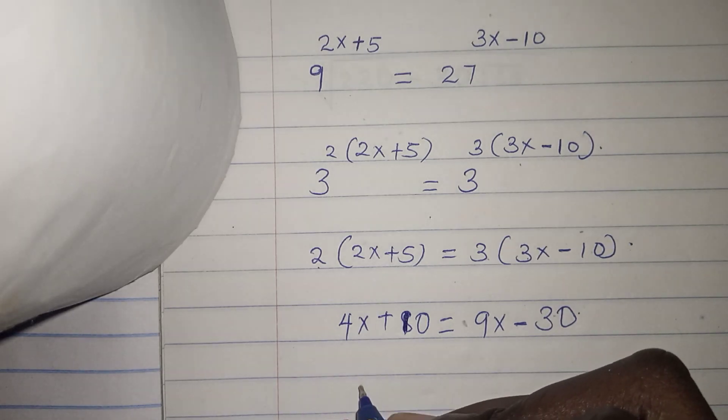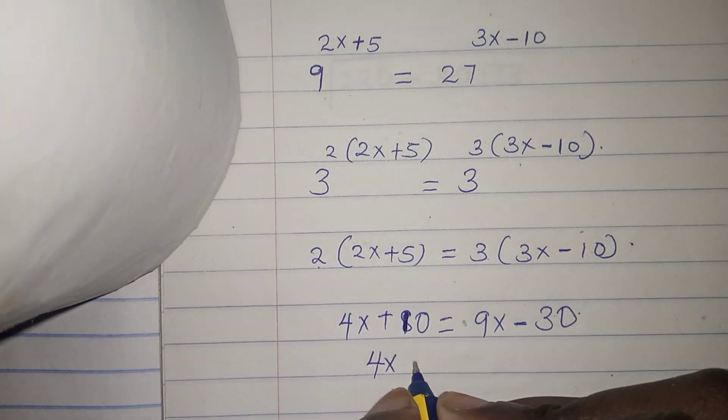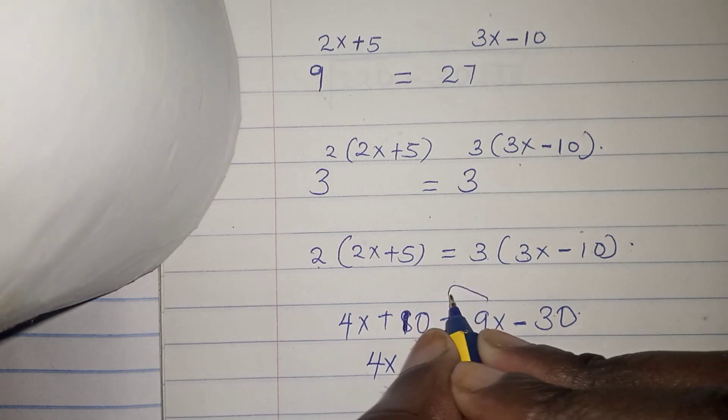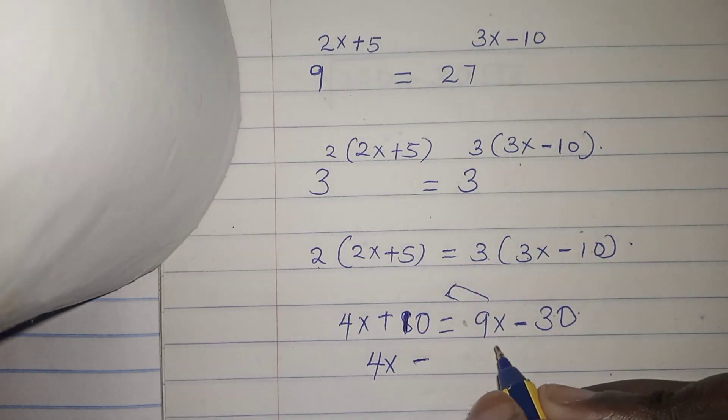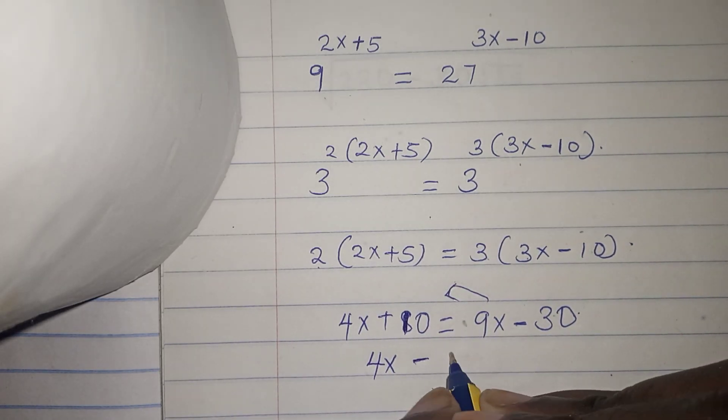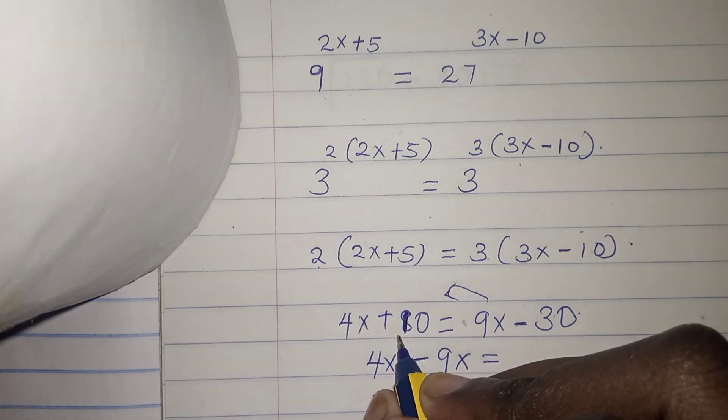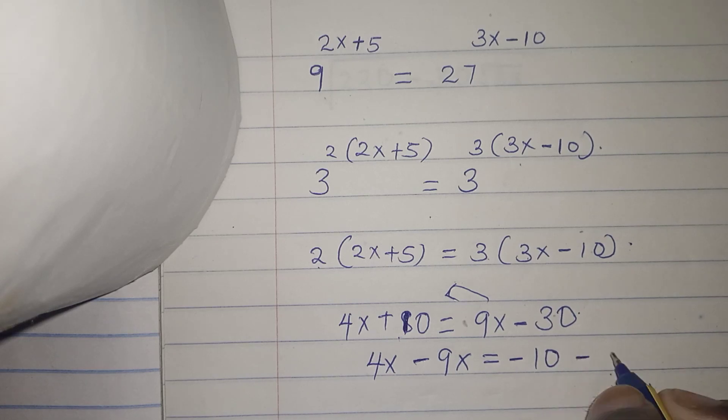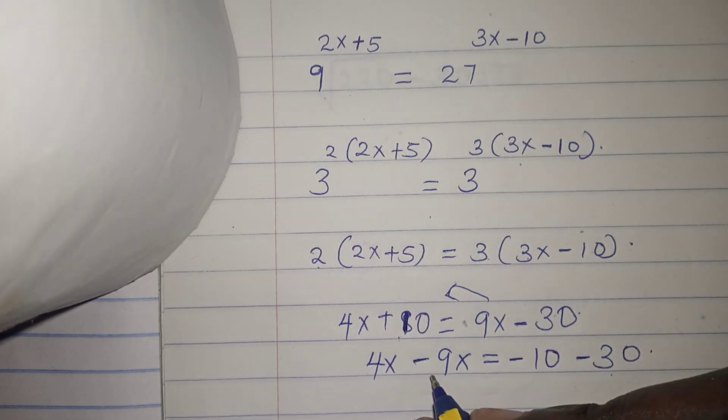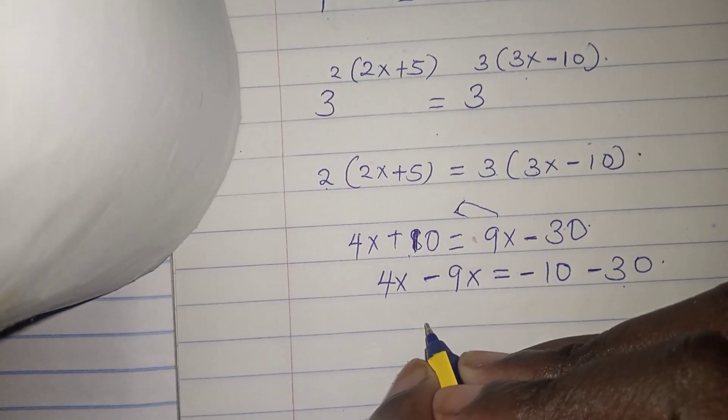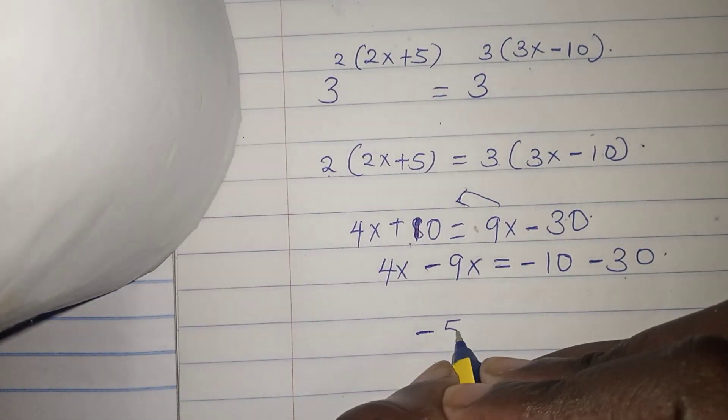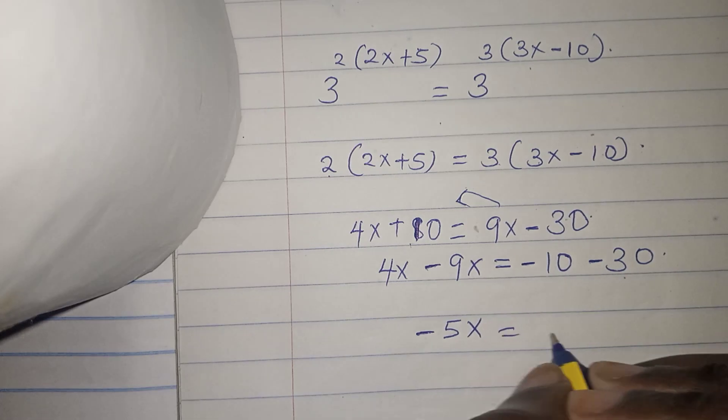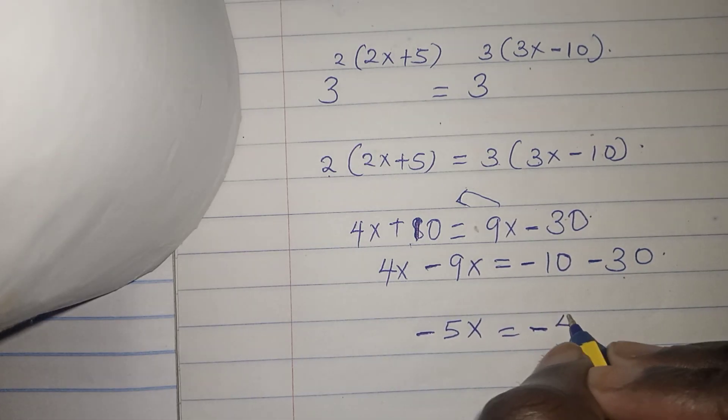So we will take 4x and bring this 9x to this side and it turns to be negative 9x, equals bringing this 10 to the other side, negative 10 minus 30. So 4x minus 9x gives us negative 5x equals negative 40.